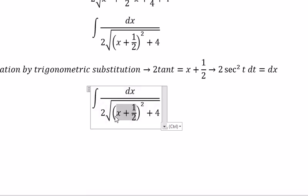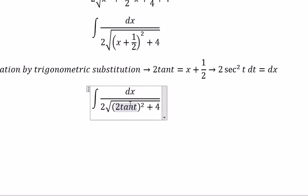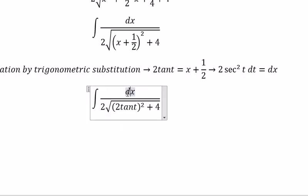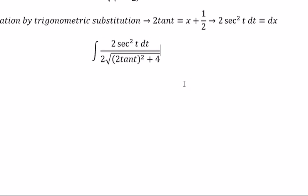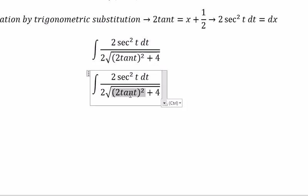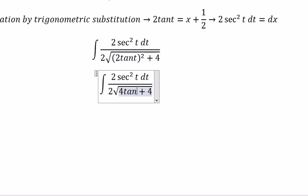So we put this in here and change for this one. We get 4tan²(t). Now, the square root of 4 is 2. So 2 multiplied with 2 is 4. We simplify this one.